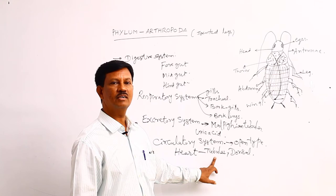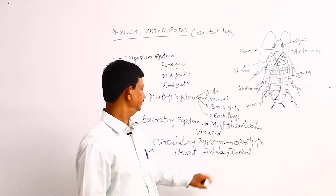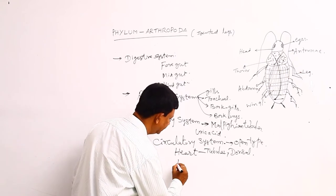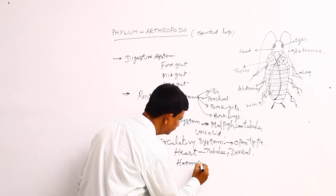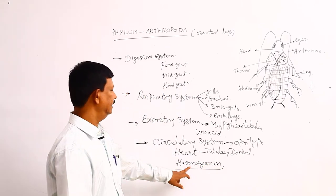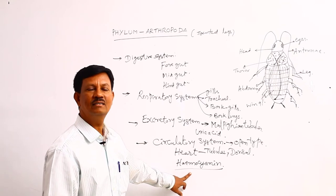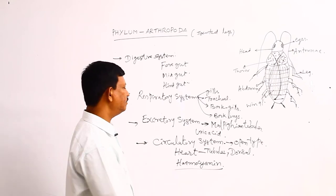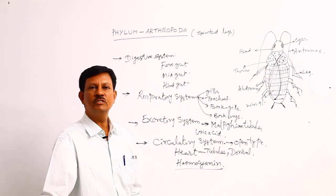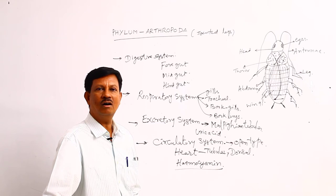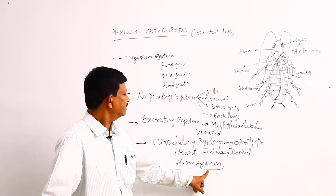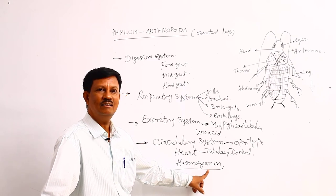From the first segment to the last segment, a tubular heart is present. The respiratory pigment is hemocyanin. It is a copper-containing respiratory pigment. Due to the absence of hemoglobin, blood is white in color. Arthropod blood is light blue or white in color due to the absence of hemoglobin. Instead of hemoglobin, hemocyanin is present in the blood.